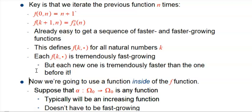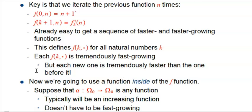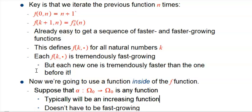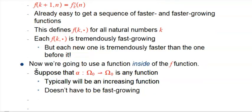We're going to use a function inside of the f function. So far the inputs and outputs have just been integers, and the functions have just been the f's. But now we're going to say: suppose alpha is any function from the integers to the integers. Typically it's going to be an increasing function, but it does not have to be a fast-growing function. The first example we're going to use will be the simplest possible function.